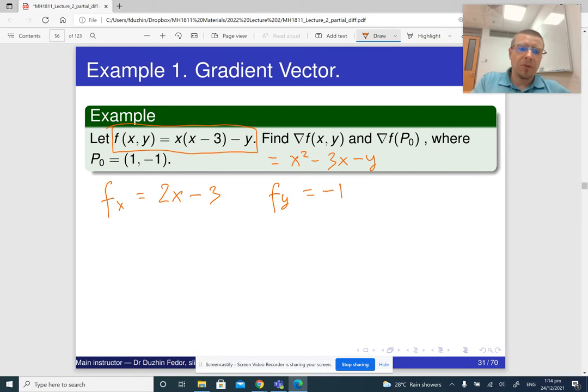So now the gradient vector of f is the vector whose two entries are 2x minus 3 and negative 1.